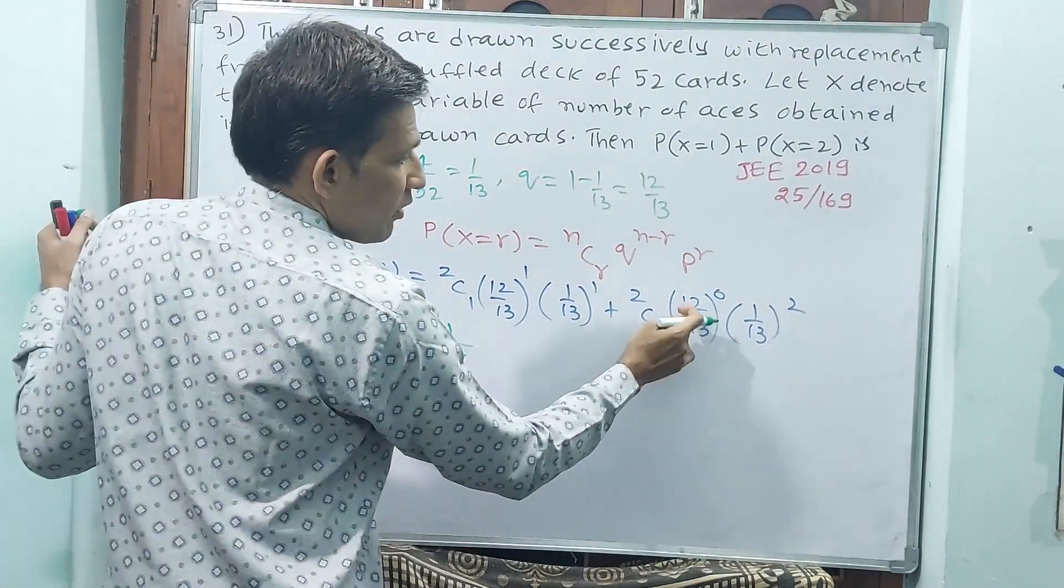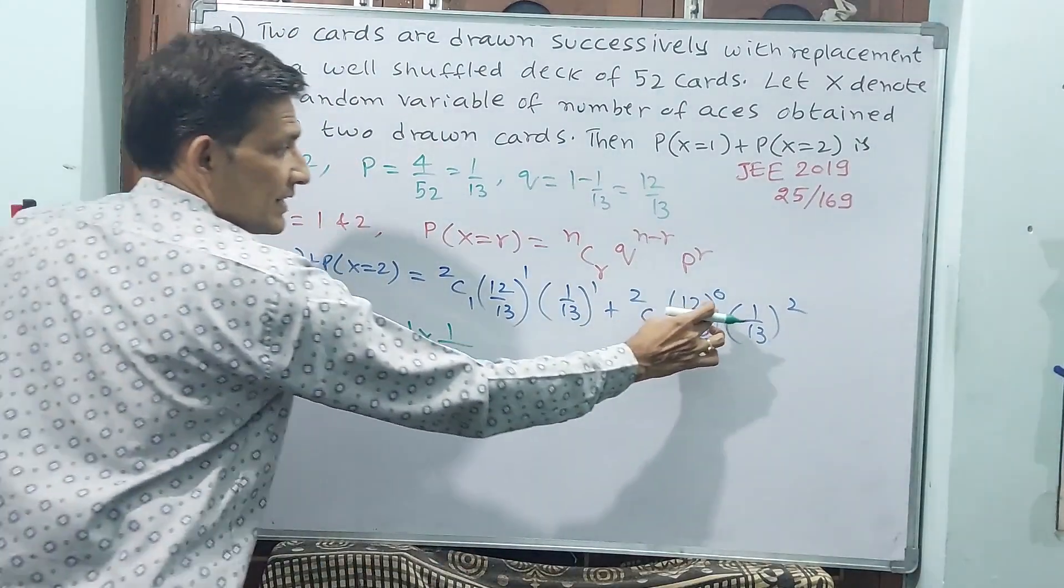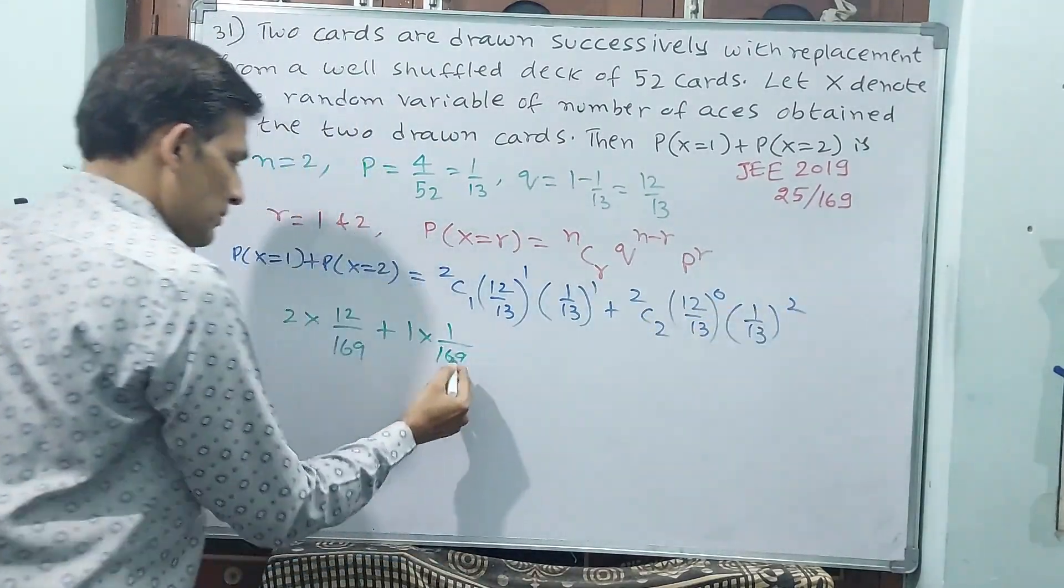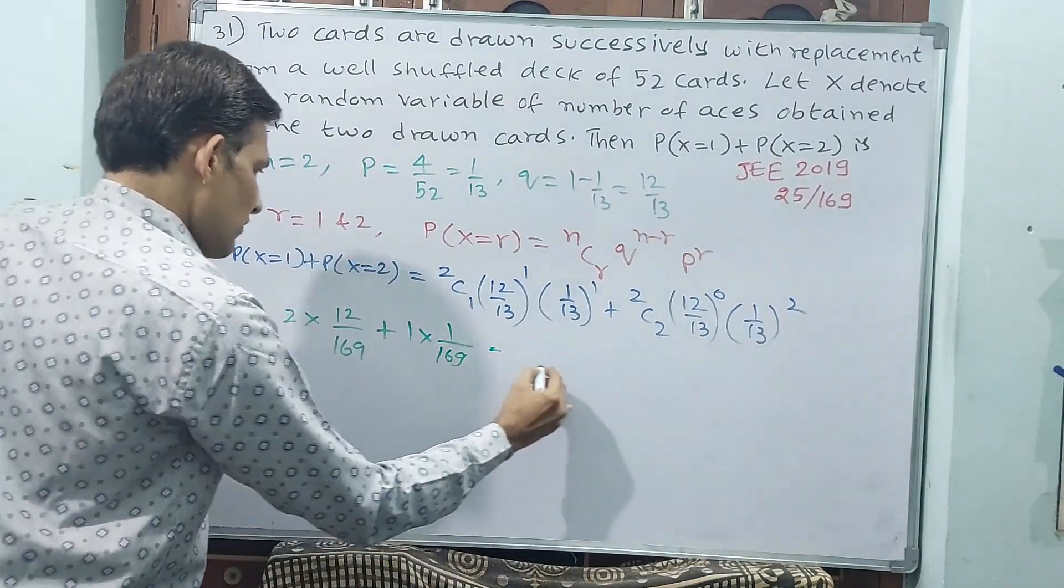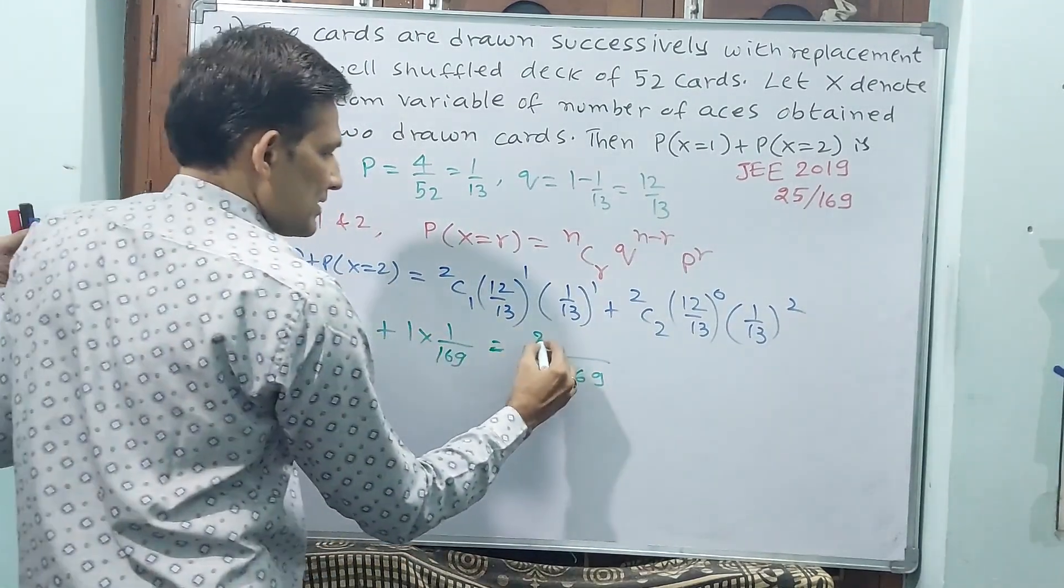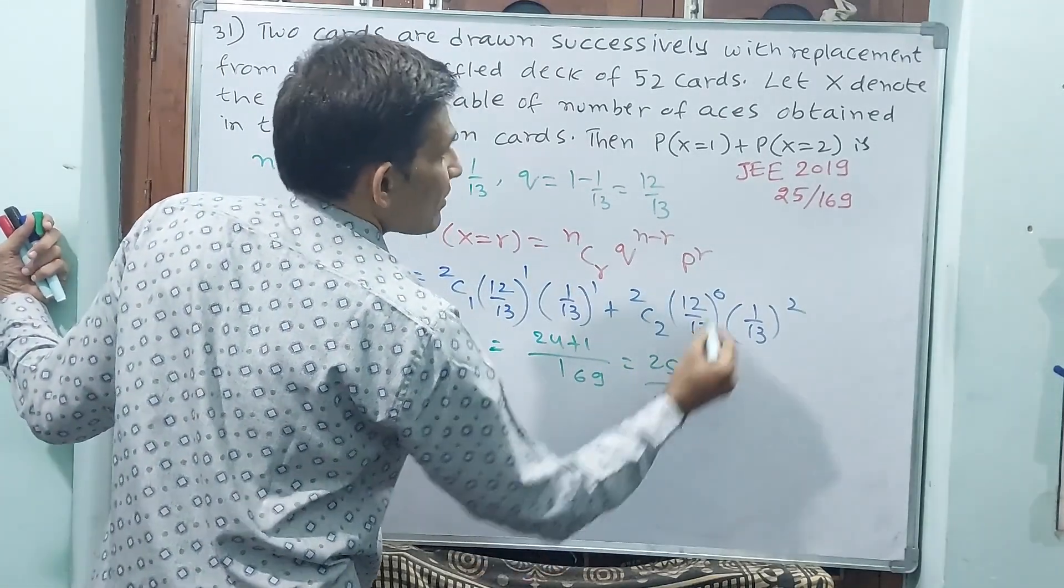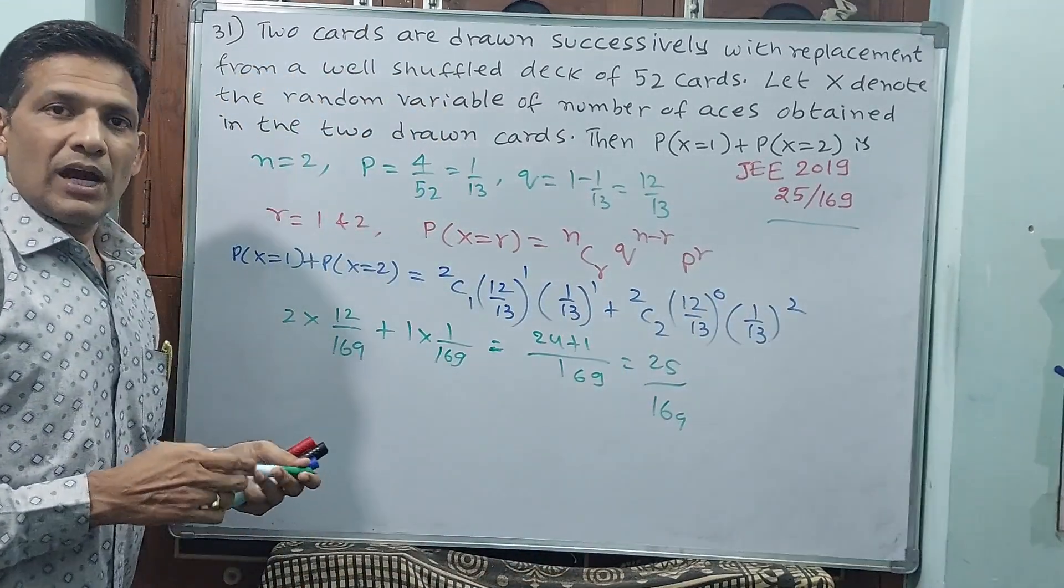See, 12 by 13 whole power 0, yes, 13 power 0 also. That is why entire this thing is 1. But this is 2, that means 169. Now I can take 169 as LCM. See, 24 plus 1, 25 by 169 will be your answer. Okay? Now, let us go to the next question.